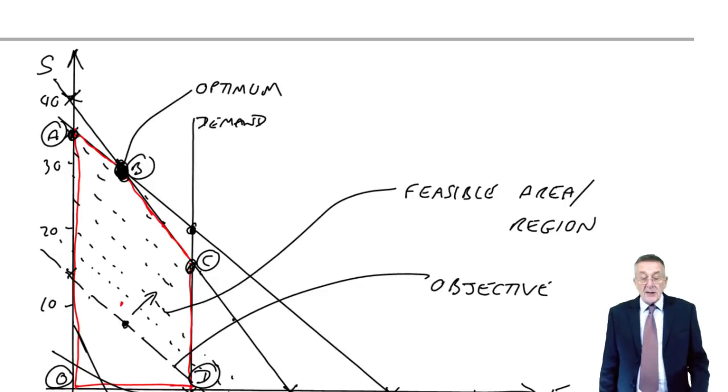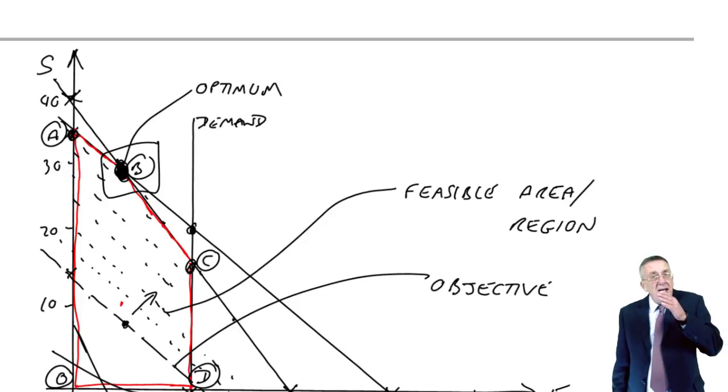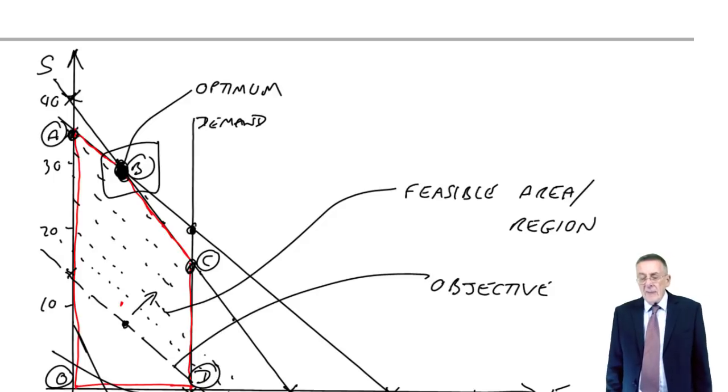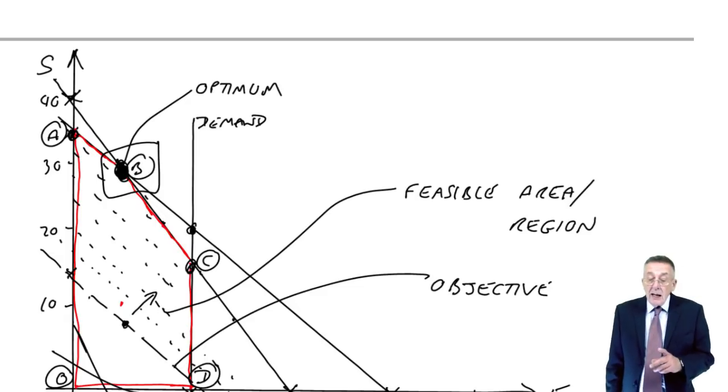So we need to ask ourselves, at point B at our optimum, are we using all of the materials available? Are we using all the labour available? Are we using all the demand available? Well, if you've understood what I mean, or what we mean by spare capacity or slack, the answer to the first two should be very obvious.